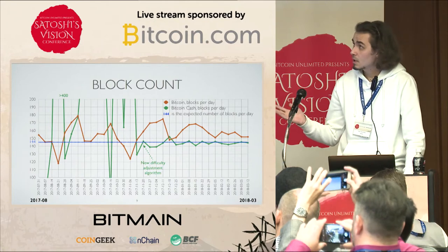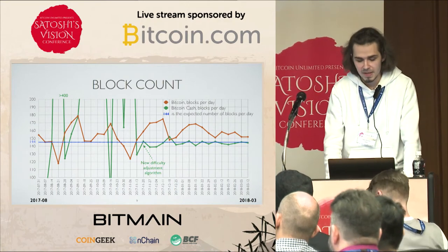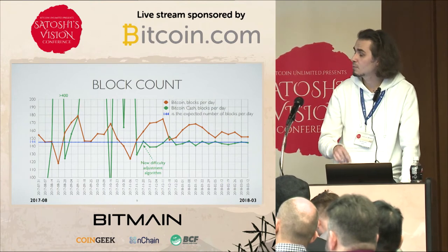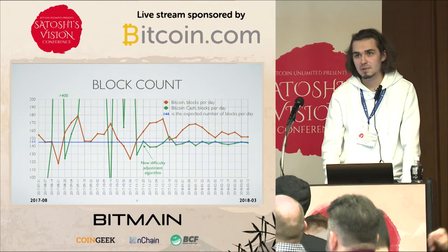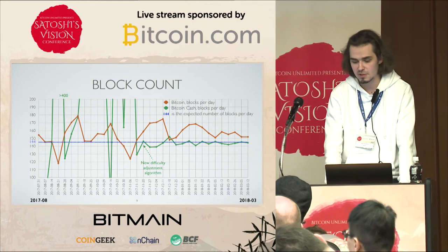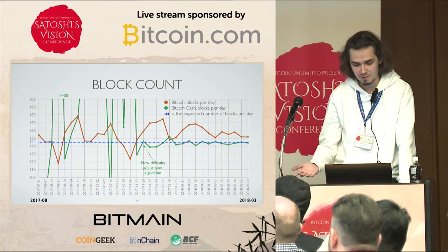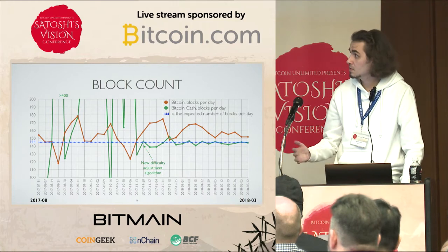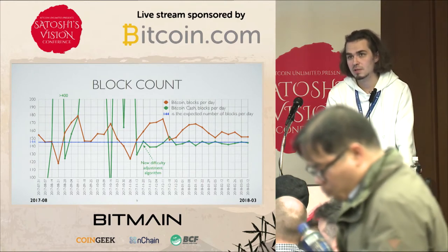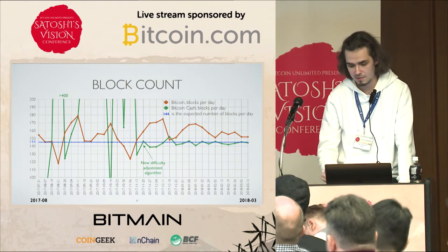Let's see the block count for both blockchains — Bitcoin is orange and Bitcoin Cash is green. On the left side of the chart, Bitcoin Cash is erratic because it actually had two different difficulty adjustment algorithms and the first one was quite buggy; it was replaced by a new one. Now Bitcoin Cash shows it is closer to the expected number of blocks per day, which is 144, than Bitcoin. So in that matter Bitcoin Cash works better than Bitcoin.